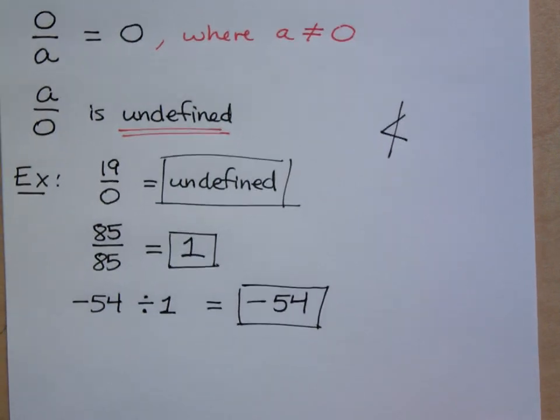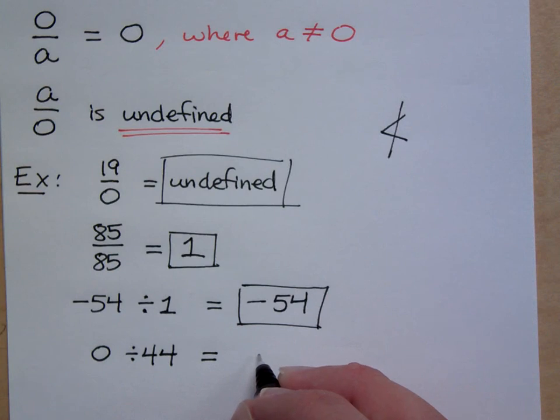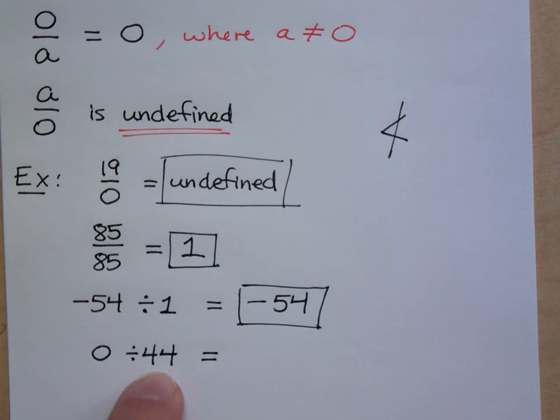And what about zero divided by 44? Now your answer will be undefined when you are dividing by zero, when your divisor is zero you're undefined. But zero is not my divisor. What I'm dividing by is 44, so this answer here is just zero.